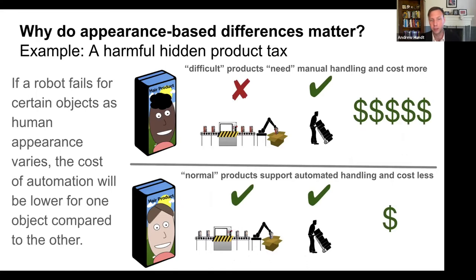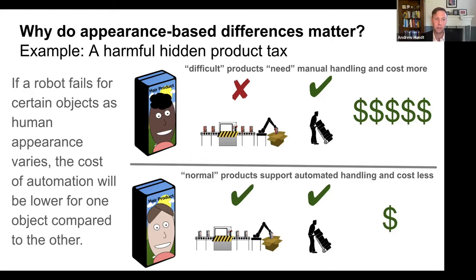Why do appearance-based differences matter? An example is a hidden product tax. Difficult products might need manual handling and cost more in a factory or warehouse setting because the text-image matching algorithm doesn't work for certain appearances, while normal products support automated handling and cost less. If a robot fails for certain objects as human appearance varies, the cost of automation will be lower for one group compared to the other — thus, a harmful hidden product tax.